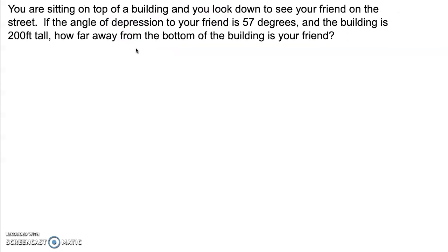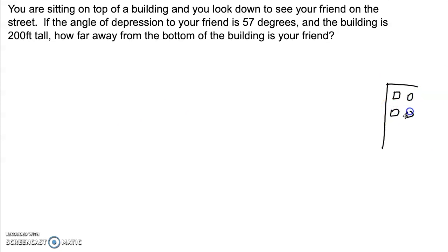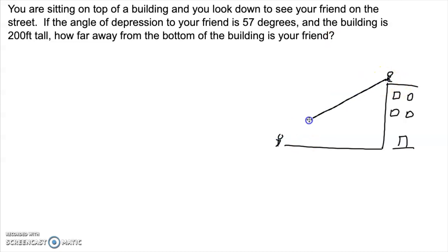Let's take a look at an angle of depression. Let's say we're on top of a building and we look down to see our friend on the street. If the angle of depression is 57 degrees and the building is 200 feet tall, how far away from the bottom of the building is your friend? All we really need to capture what's going on here is a triangle. When we look down at our friend, we're looking at an angle of depression — which means we're looking down from horizontal.